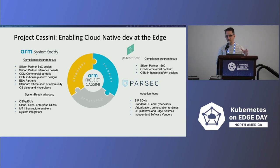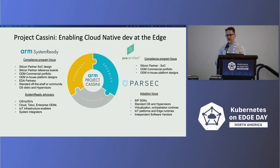ARM System Ready is the first one I'll talk about. In a nutshell, it's about making sure you can run a standard OS on any hardware. We work with silicon manufacturers, ODMs, and OEMs, give them recipes and guides to develop their devices, and then test them in a certification lab to make sure standard operating systems can just boot. There are different bands of this program for different device types — some use device tree to identify peripherals, others rely on UEFI — ensuring the expected OSes are going to boot.